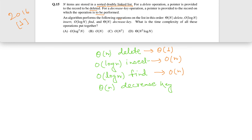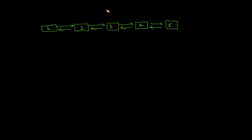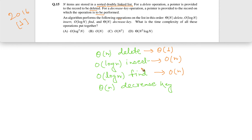For decrease key, a pointer is provided to the record on which the operation is to be performed. For example, decreasing key 3 to 1.5 requires first deleting the node — which takes constant time — but then we have to find the proper position to re-insert it in the sorted doubly linked list, which takes order(n) time. Therefore, the decrease key operation also takes order(n) time overall.